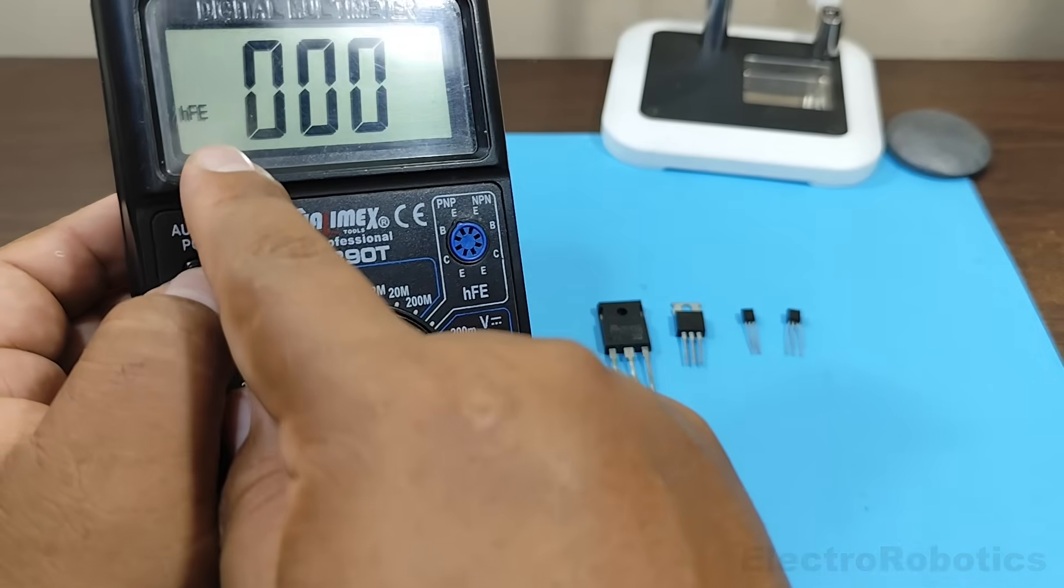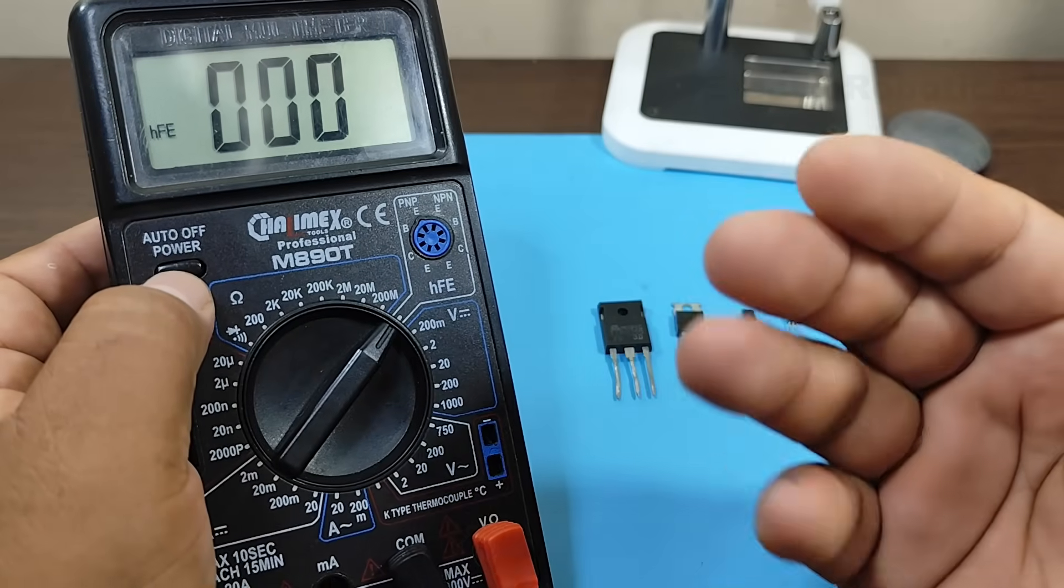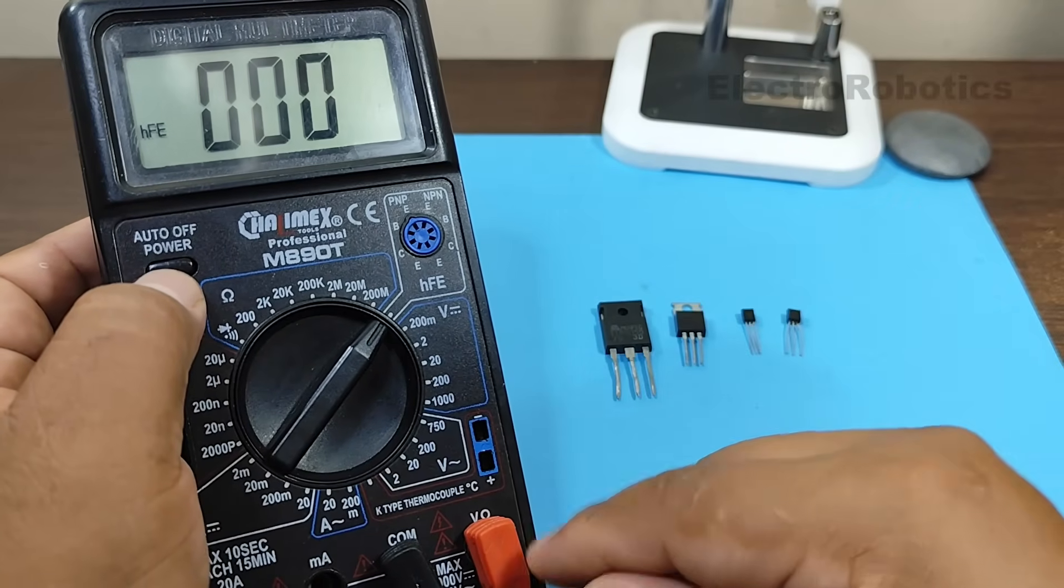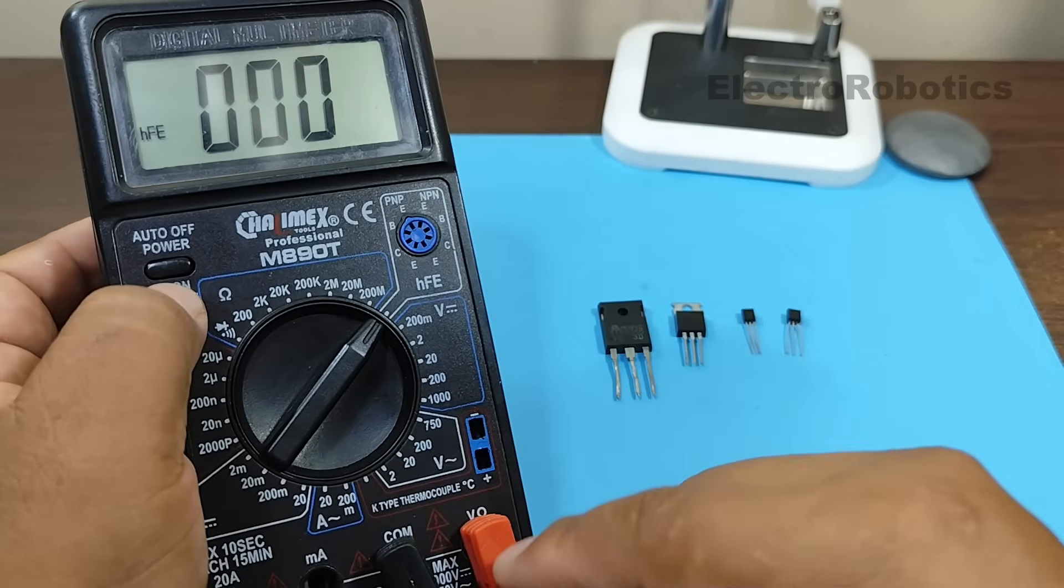When we select that scale, the word HFE will appear on the multimeter screen. This gain characteristic is very important in the areas of audio amplifiers or signal amplifiers.